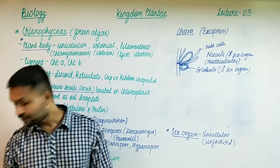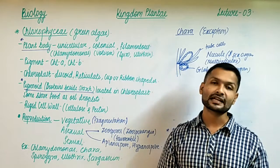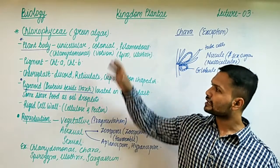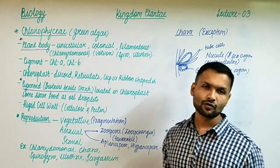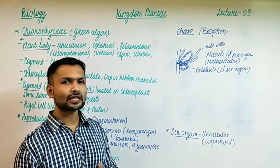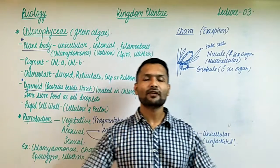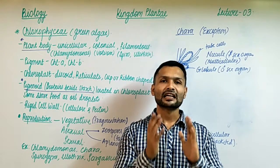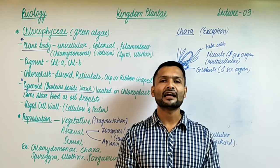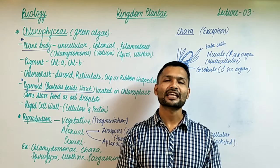So Chlorophyceae is done. The basic points to remember: focus on pyrenoids and mainly on the reproduction aspects of Chlorophyceae, as many MCQs can come from this section. Please share this lecture with your friends, give likes, comment if you liked it, and subscribe to the channel and hit the bell icon for notifications. Thank you.